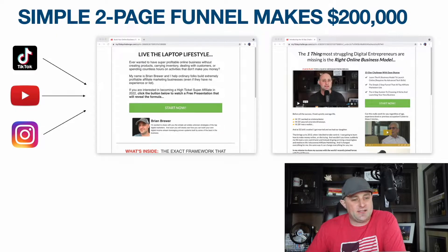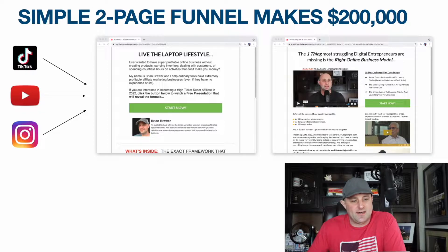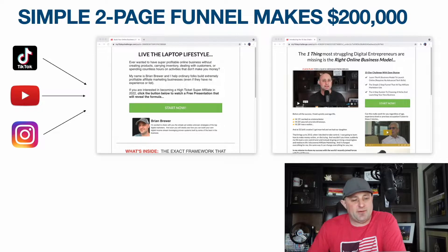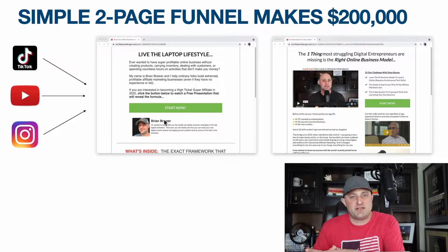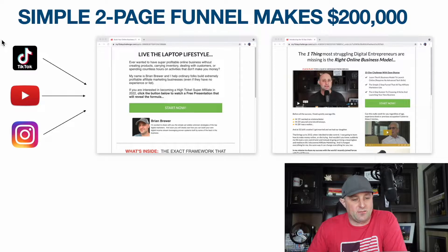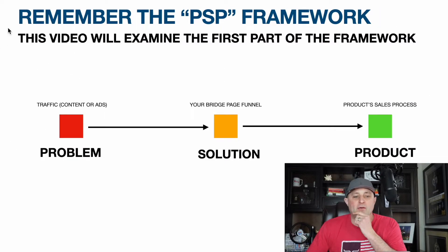Here is a slide I showed you in one of the previous videos — we talked about the simple two-page funnel. Pretty simple, straightforward. It obviously forwards people over to the product. But what we need to talk about is how we get people to hit this landing page so we can capture their email, so they can go watch our bridge page video, and hopefully buy the product we're promoting. If we remember the PSP framework, this is the section we're going to be talking about.